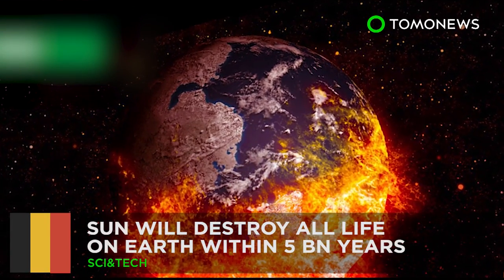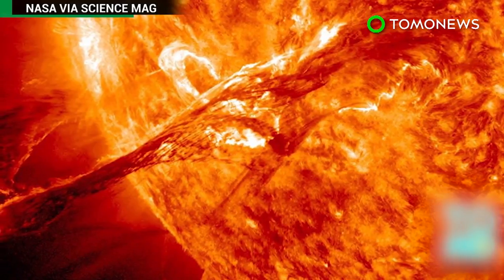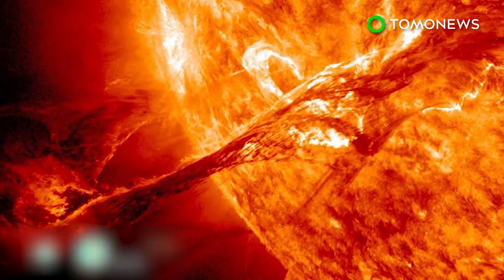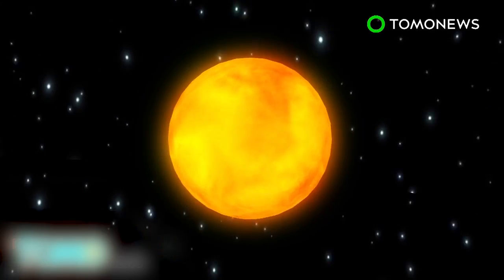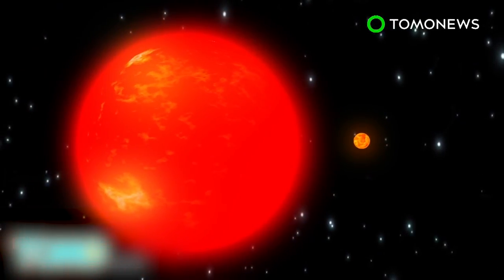It's gonna be hell on Earth. Astronomers predict that all life on Earth will be wiped out in the future, as the sun balloons in size and scorches the planet. Using the world's most powerful radio telescope, scientists forecast that within 5 billion years, the sun will grow into a red giant star, 100 times its current size.